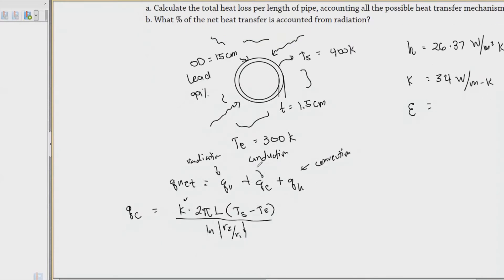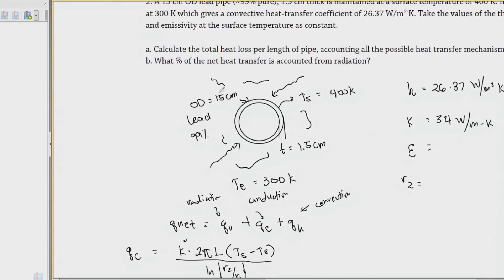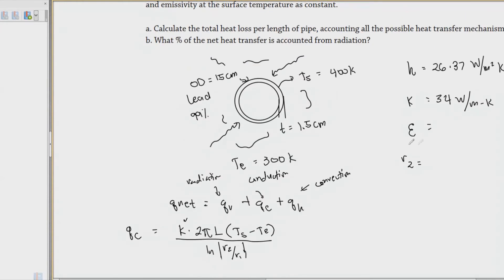For r2 and r1: the outer radius r2 = 15/2 = 7.5 cm. The inner radius r1 = r2 minus the thickness = 7.5 - 1.5 = 6 cm.